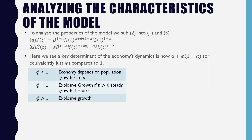If phi is less than 1, then our economy depends exclusively on our population growth rate, because there isn't much technology coming in and the only way output increases is through labor, which grows at rate n. If phi is equal to 1, we'll have explosive growth if the population growth rate is positive, and steady growth if it is equal to 0.